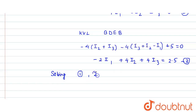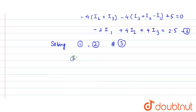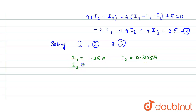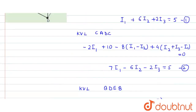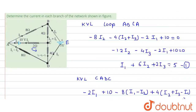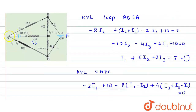Solving Equations 1, 2, and 3 simultaneously, the values of i1, i2, and i3 are: i1 = 1.25 A, i2 = 0.3125 A, and i3 = 0.9375 A.